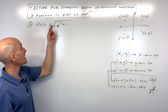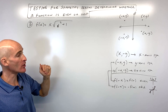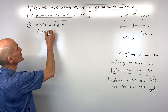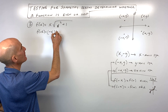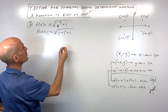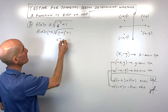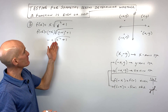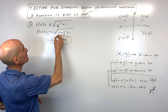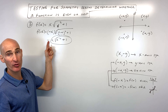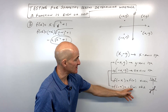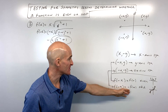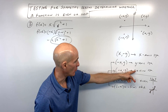One more example: f(x) = x · √(x² + 1). For the even/odd test, substitute negative x: we get negative x times the square root of (negative x)² + 1, which simplifies to negative x · √(x² + 1). That's negative one times our original function, so the function is odd — a rotation 180 degrees about the origin. Once we know it's odd, we also know it has origin symmetry.